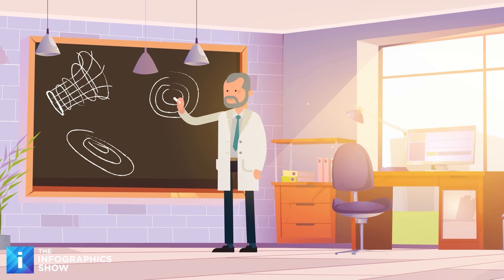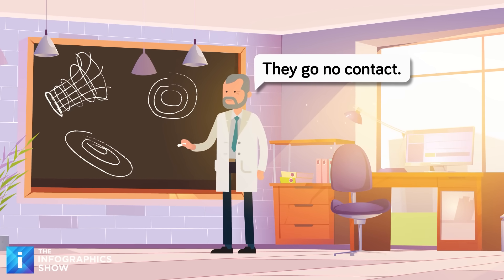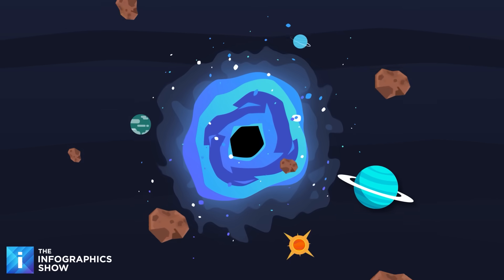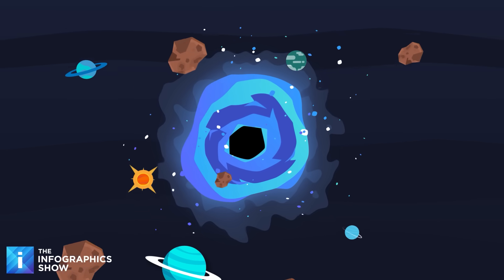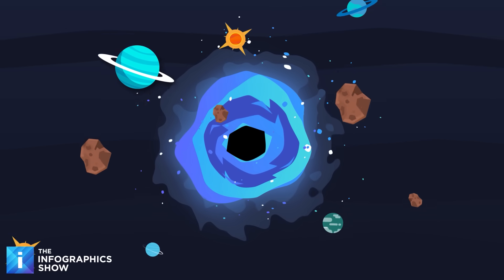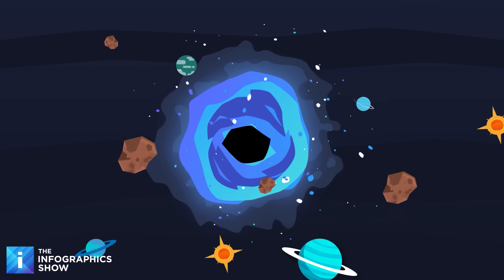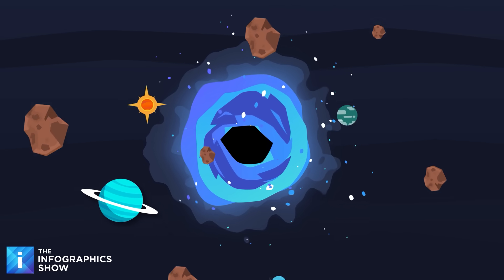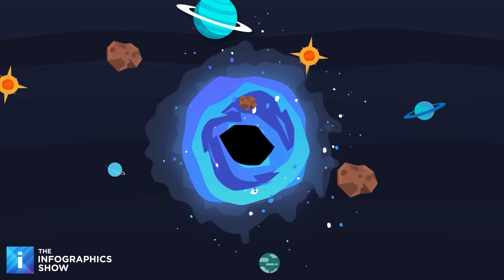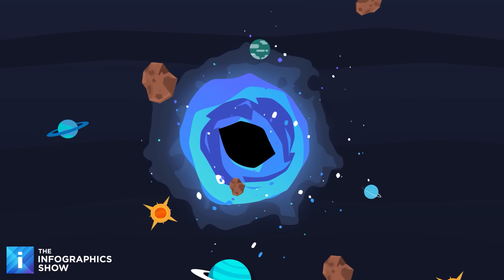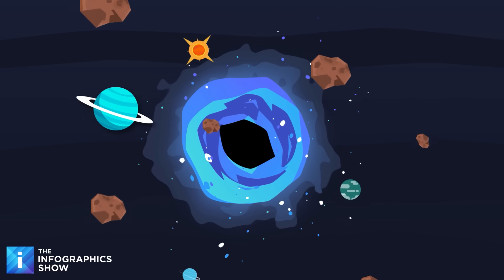The cruel mathematics of expansion mean that eventually black holes become so far apart they can no longer interact gravitationally. Each black hole becomes a universe unto itself, the only source of gravitational disturbance in its local region of space-time. The concept of nearby becomes meaningless. Your nearest neighbor is so far away that even if you could somehow communicate at the speed of light, a simple hello would take longer to reach them than our universe has existed.